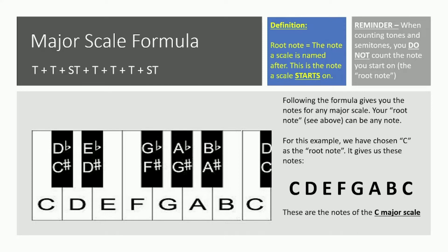Following the formula gives you the notes for any major scale. Your root note can be any note. For this example we have chosen C, and it gives us these notes: C D E F G A B C. It doesn't give us any sharps or flats. Sharps being the hashtag symbols and flats being the little B's that you can see next to the notes on the black keys.